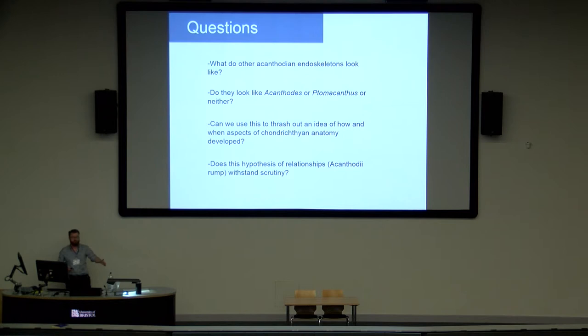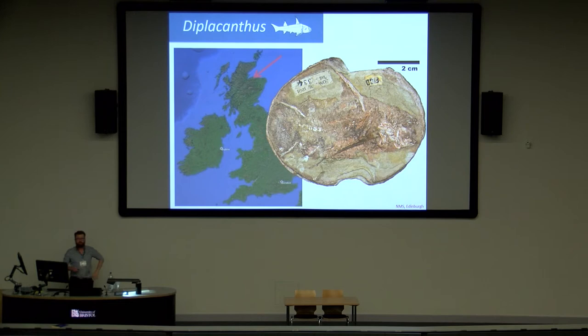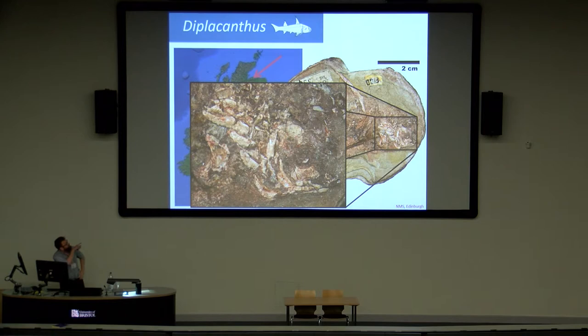This work from my PhD uses synchrotron tomography and computed tomography to work out what's happening with acanthodian endoskeletons. Do they look like Acanthodes or Tomacanthus or neither? Can we use that to work out when anatomical changes happened in the chondrichthyan stem group, and does the Coates hypothesis of relationships withstand scrutiny when additional endoskeletal information is added? The first taxon is Diplocanthus, from this rump clade — middle Devonian, Scottish. This is the specimen we scanned, which uniquely has cartilages preserved but very difficult to interpret from the surface.